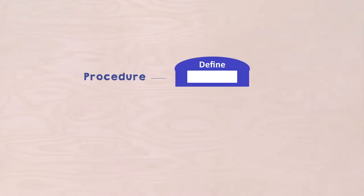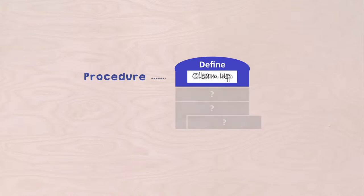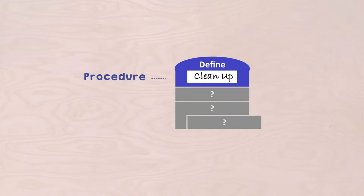Could you come up with the procedure? First you name your procedure — write it down in this block. I call my procedure, for instance, Cleanup. Then add the blocks that you want to have in your procedure. You do this by sticking them under the Define block, like this. Your turn — pause the video and come up with your procedure.